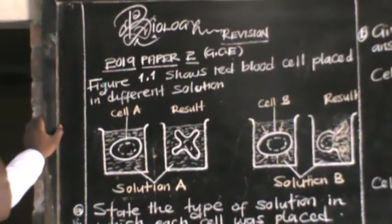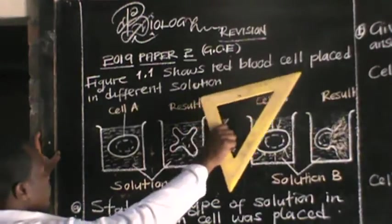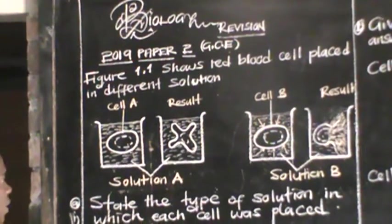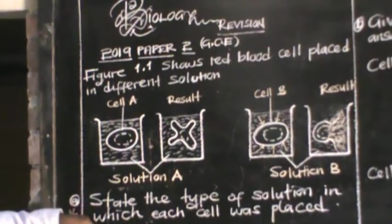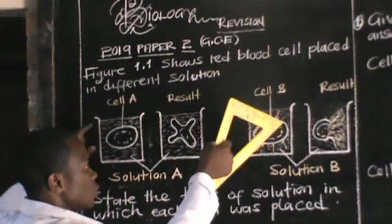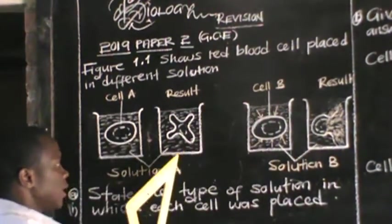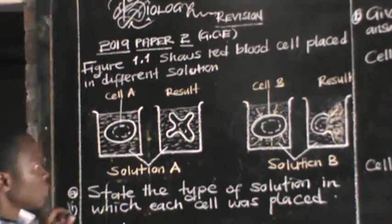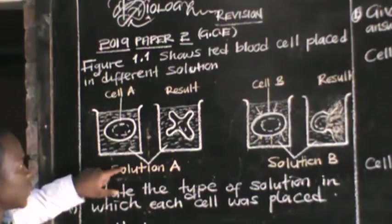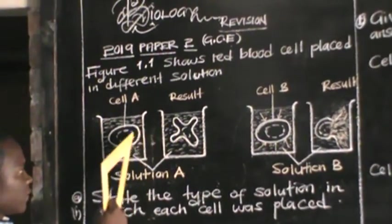Let's look at the 2019 biology paper, Figure 1.1, which shows red blood cells placed in different solutions. There is solution A and solution B. One red blood cell, cell A, was placed in solution A, and another red blood cell, cell B, was placed in solution B. After some hours, the shape of cell A changed, as you can see from the different forms shown.